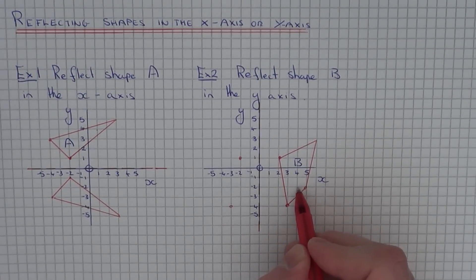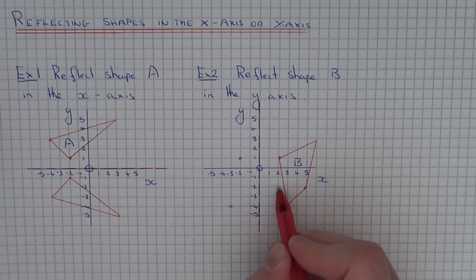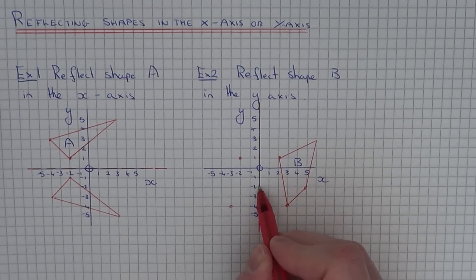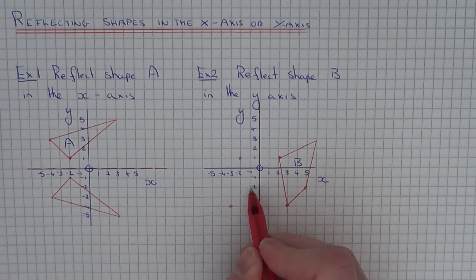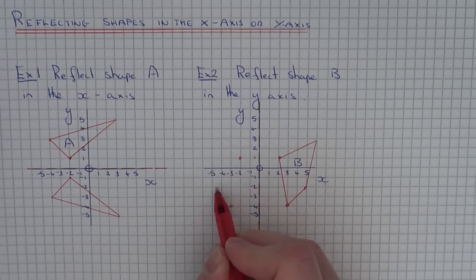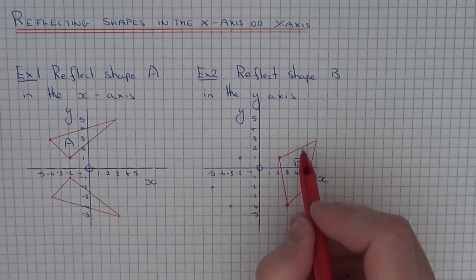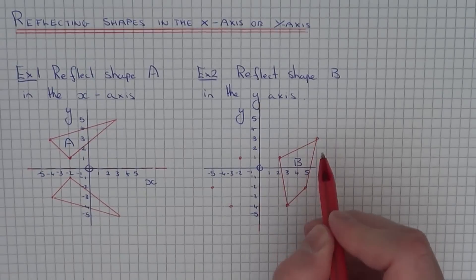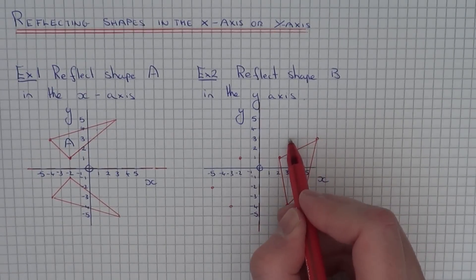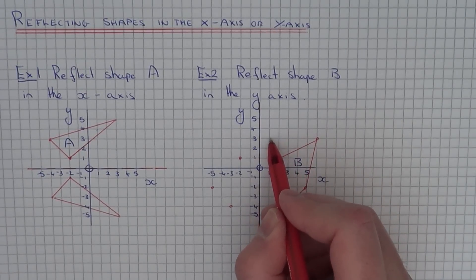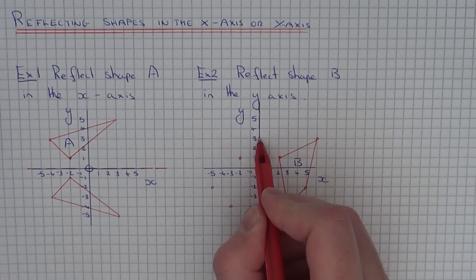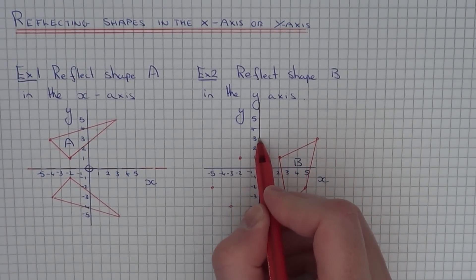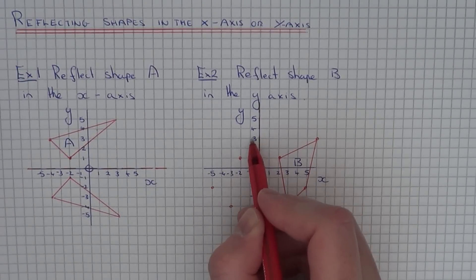So just get your ruler now and join those points up neatly. Let's do this one next — one, two, three, four, five. So that's five squares away on the other side. And our final corner is one, two, three, four, five, six squares to the y axis, so that will be six squares away from the y axis.